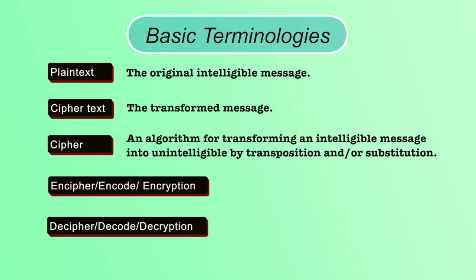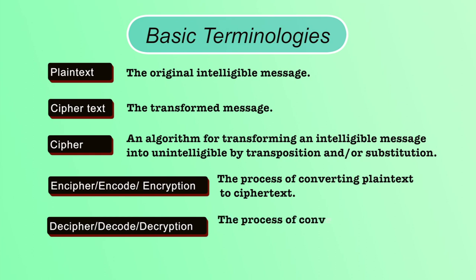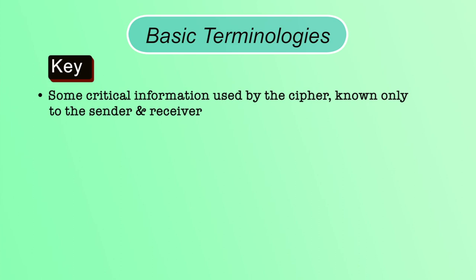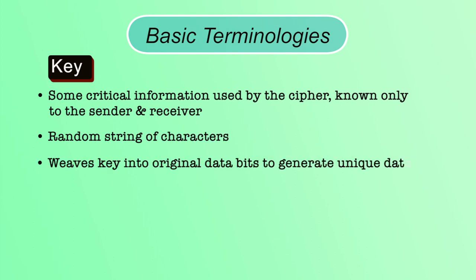Encryption, or encoding, is the process of converting plain text to ciphertext. The algorithm we use is called a cipher and the process of conversion is called encryption, enciphering, or encoding. The reverse is called deciphering, decoding, or decryption. Key: it is critical information used by the cipher to convert plain text to ciphertext — it is a random string of characters, and the security of the cipher depends on the key.